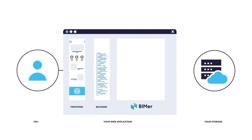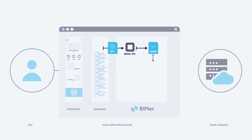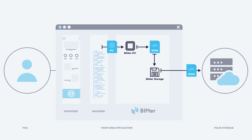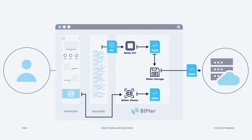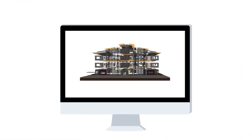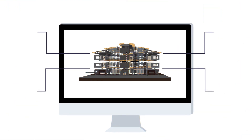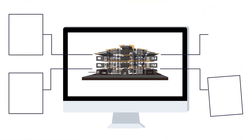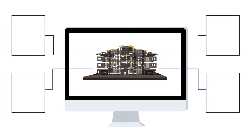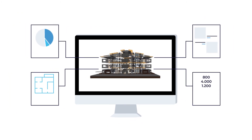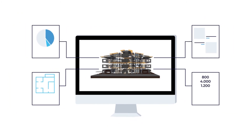Once provided with an IFC file, Bimmer converts it to a JSON file structure that can be viewed in an online browser using our JS library. You get easy access to model elements and can make changes in the look and feel of the solution's UX. You can view different layers and parameters of the project.